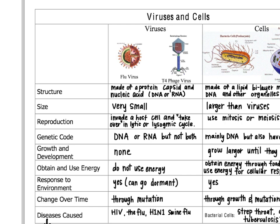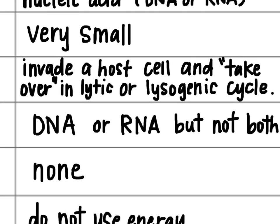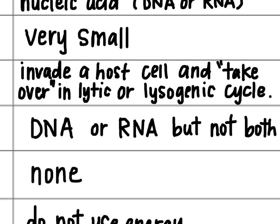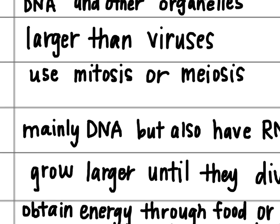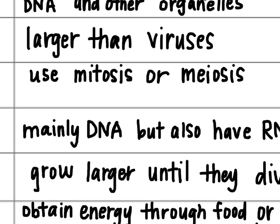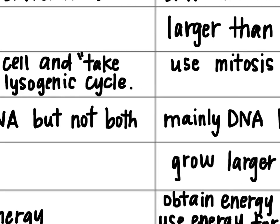In reproduction, the virus has to reproduce by invading a host cell. It takes over and either by going through the lytic or the lysogenic cycle, it makes copies of itself. So it needs a host cell to produce more viruses — it can't do it on its own. In a cell, they'll either use mitosis or meiosis, or sometimes asexual reproduction like binary fission.